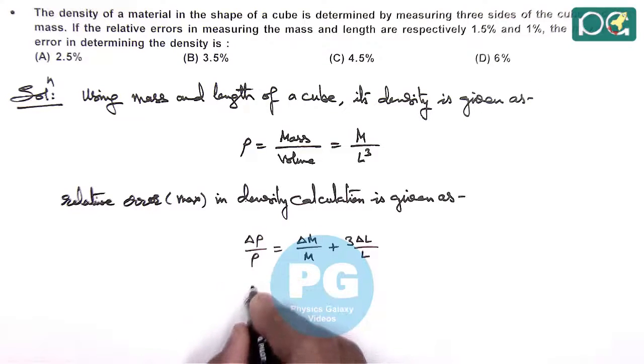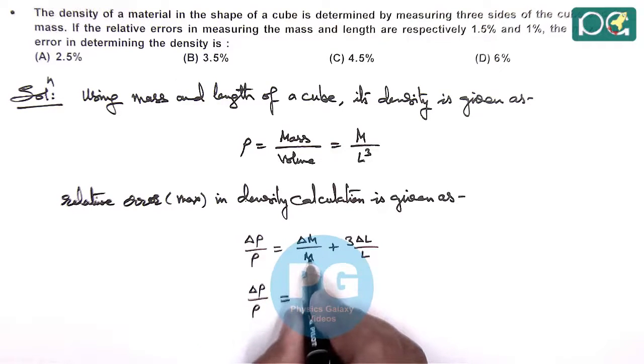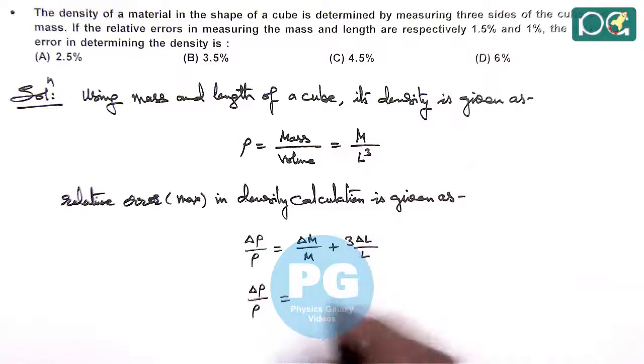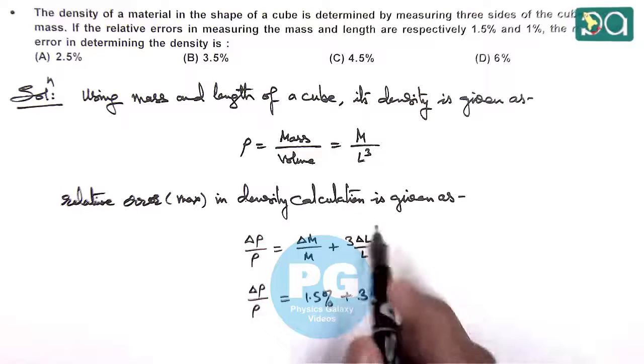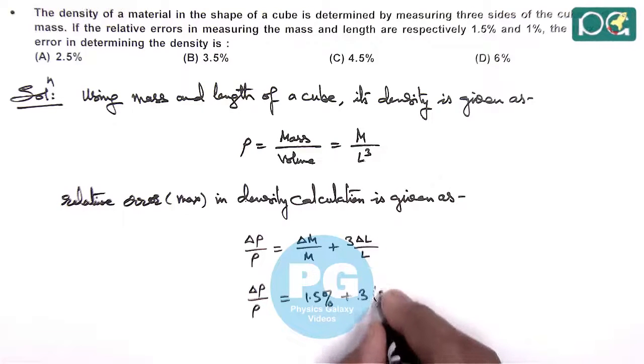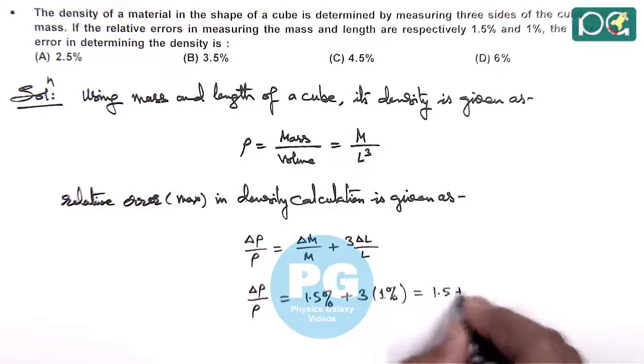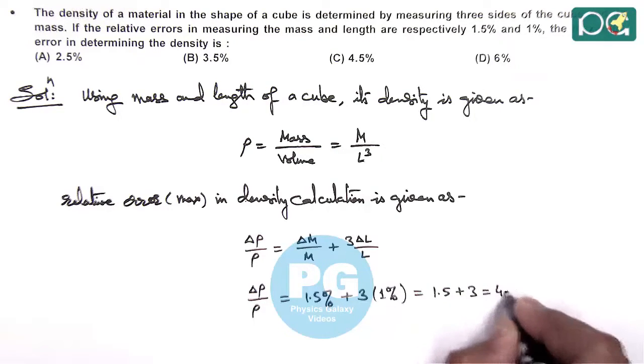So here delta rho by rho can be given as, here delta m by m, this is the relative error in measurement of mass, which is given to us as 1.5%. This we can write 1.5% plus three times the error in measurement of length is 1%. So this gives us 1.5 plus 3, that is 4.5%.